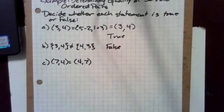Next, we have the ordered pairs (7,4) and (4,7), and we're asking is it true or false that they are equal. And it is false, because order does matter in ordered pairs.